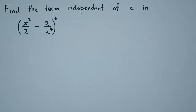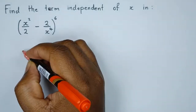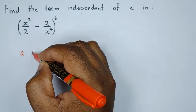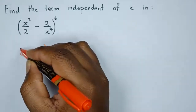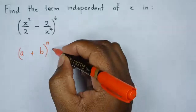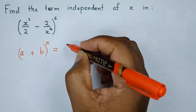So how can we find the term independent of x in this particular expression? There are a few things we need to focus on and understand. First of all, we need to know that if you have an expression like this, the formula to use is for the expansion of (a + b) to the power n — in this case our n is 6.